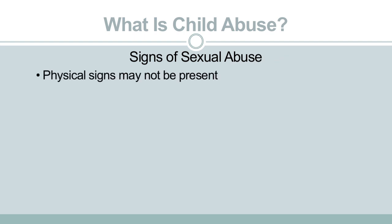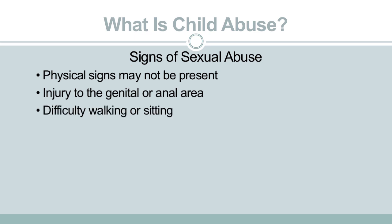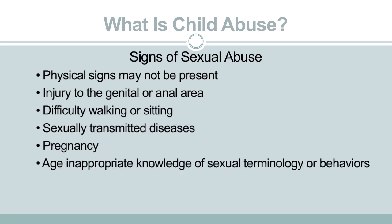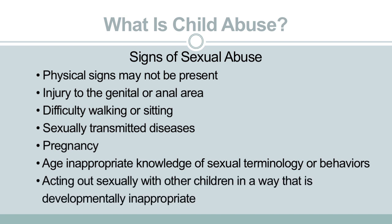Sexual abuse can be difficult to identify due to the lack of physical signs typically present in other types of abuse. Some physical signs that can be seen in cases of sexual abuse include injuries to the genital or anal areas, a child who shows difficulty or discomfort when walking or sitting, the presence of a sexually transmitted disease, pregnancy, age-inappropriate knowledge of sexual terminology or behavior, and inappropriate acting out sexually with other children that goes beyond normal development and curiosity.